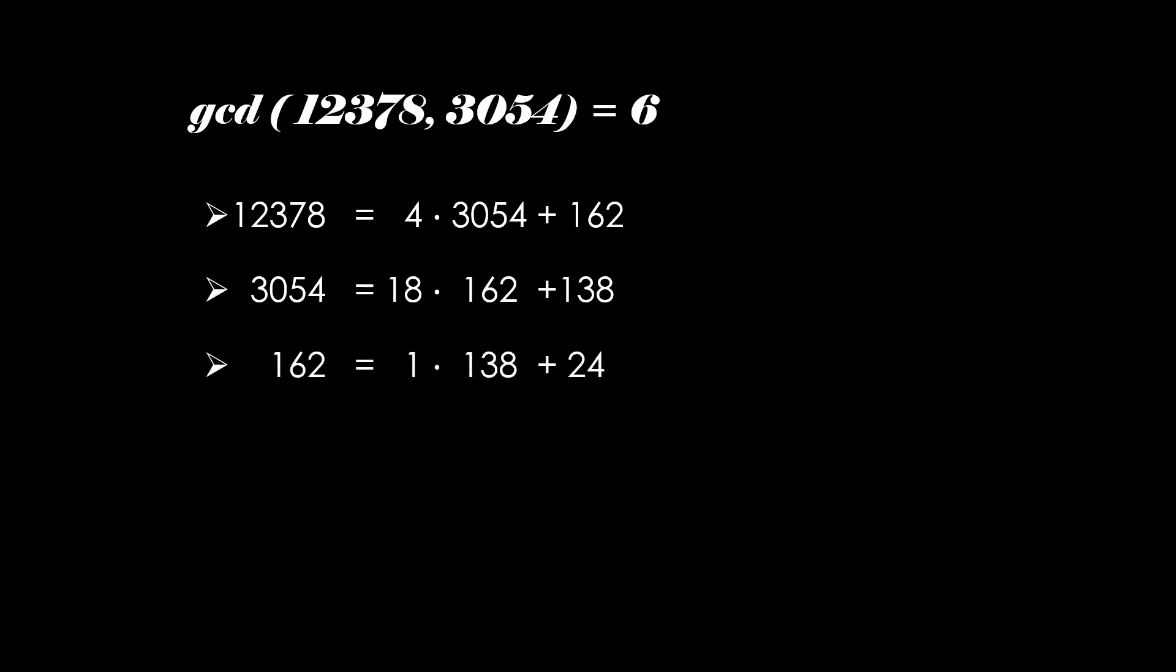And let us rewrite this 162 and 138 using the division algorithm. So continue the process. Finally, this 18 can be written as a product of 6 with a zero remainder. So that 6 will be the GCD for the two numbers.